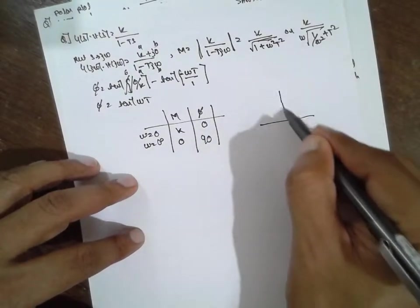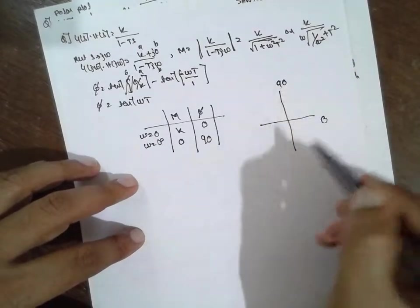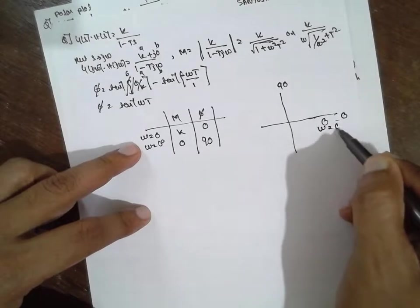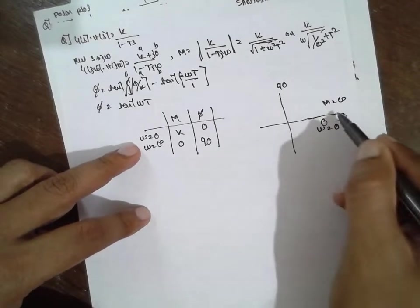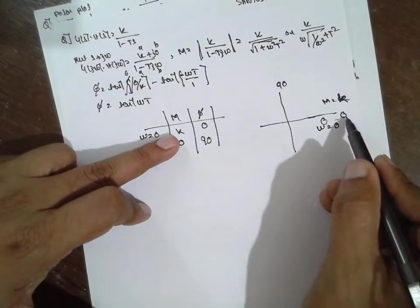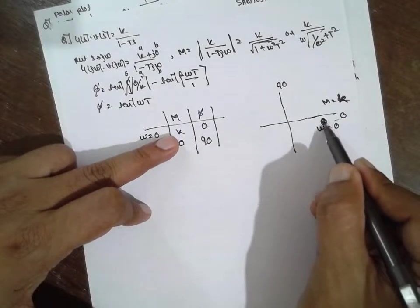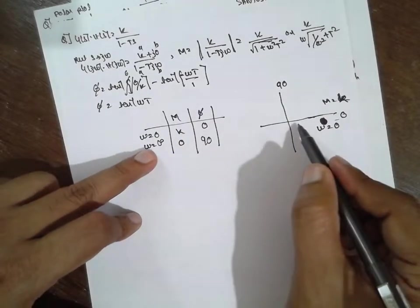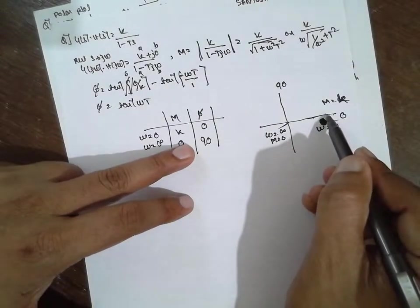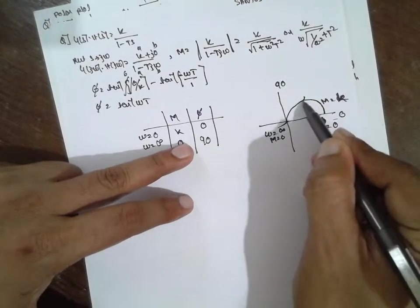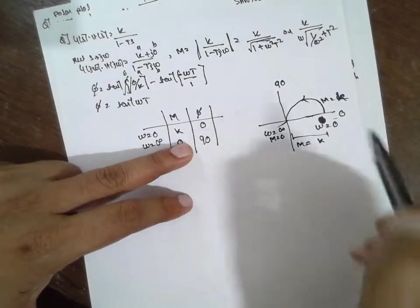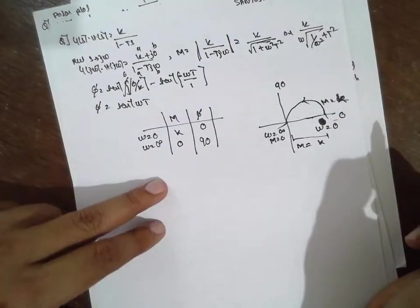When ω equals 0, M equals K at 0 degrees angle — starts here. When ω equals infinity, M equals 0 at positive 90 degrees — ends here. The value K marks the starting point on the real axis. M equals 0 is the endpoint. This is the special problem.